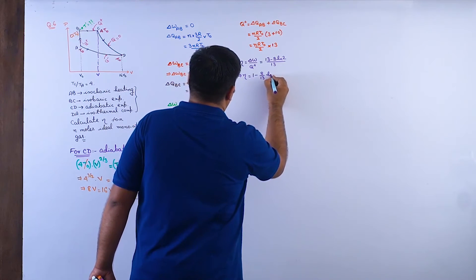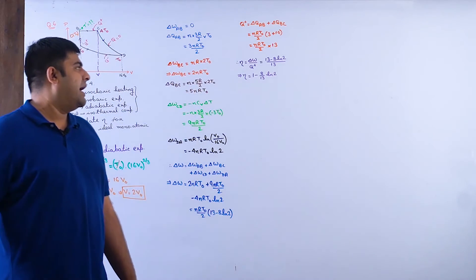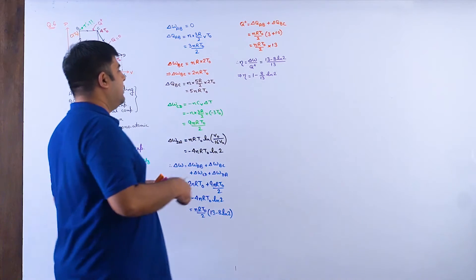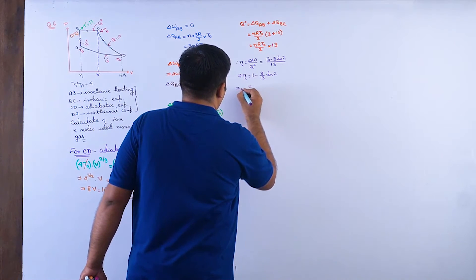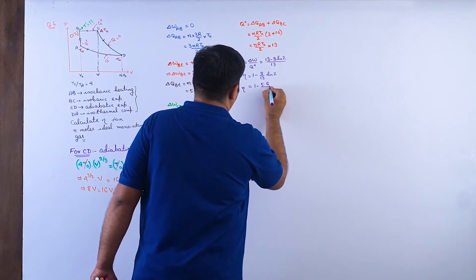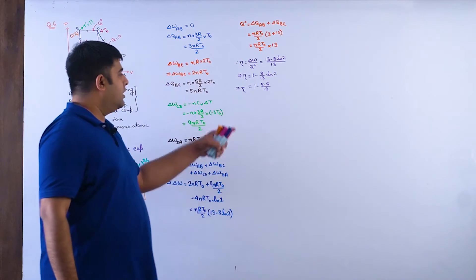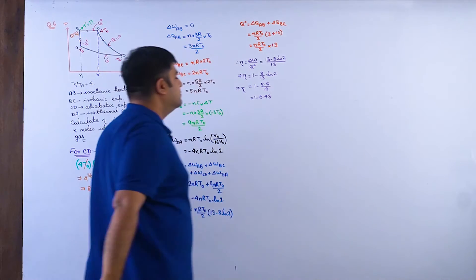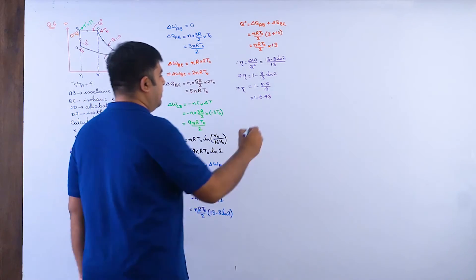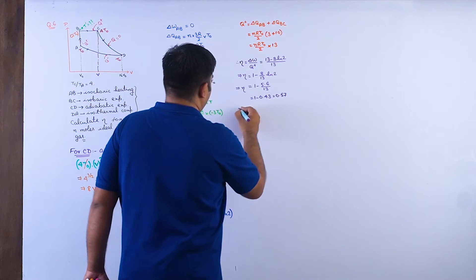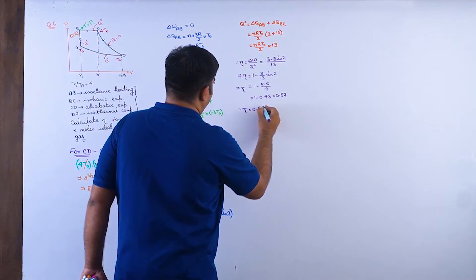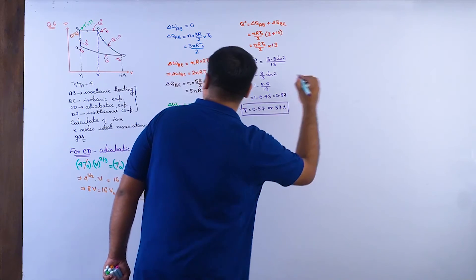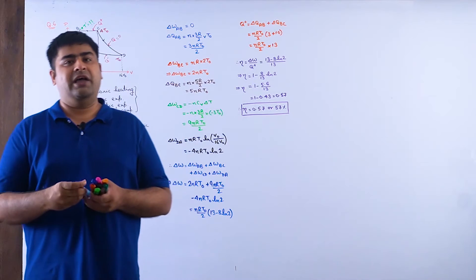So η = (13 − 8ln2) / 13 = 1 − (8ln2)/13. Using ln2 ≈ 0.7: η = 1 − 5.6/13 = 1 − 0.43 ≈ 0.57, i.e., η ≈ 57%.